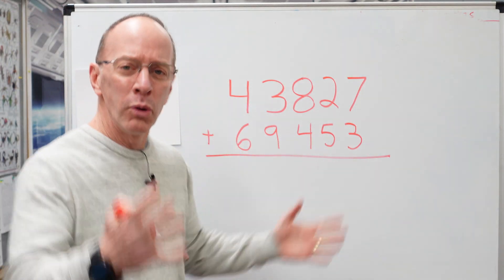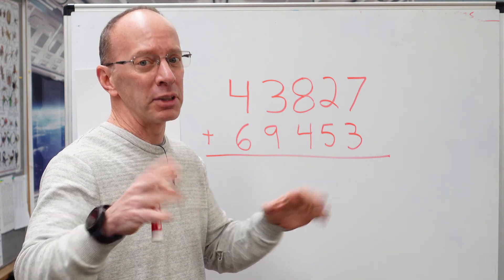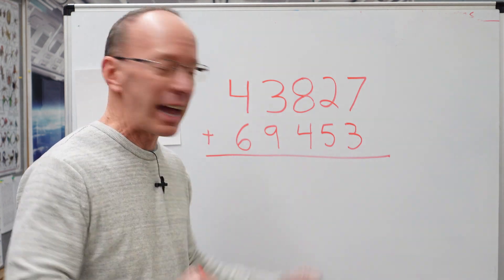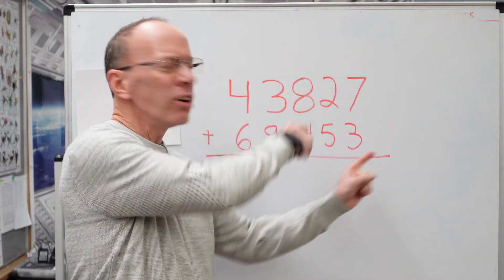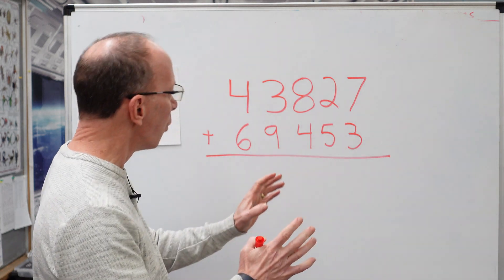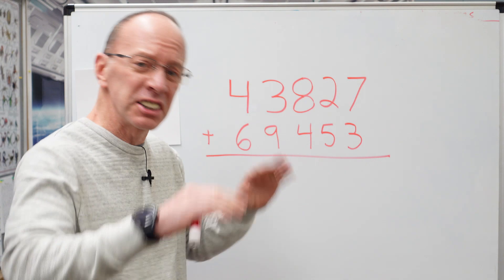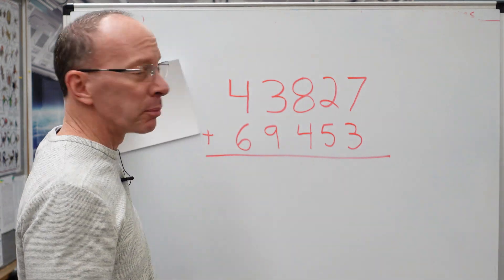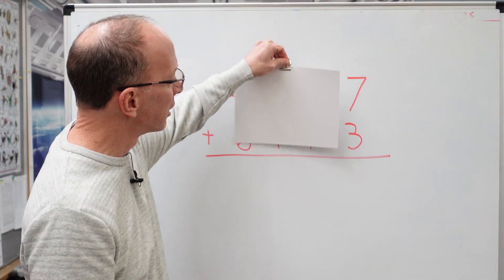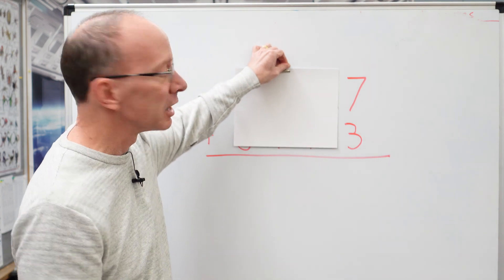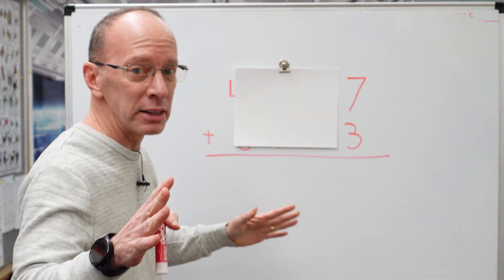All right. So first of all, what do we do? We got different steps on how we add. First, we add the ones. We go all the way over here, but whoa, all these numbers look a little confusing. That's all right. Just cover it up. Take a piece of white paper like this, cover it up. Take it little by little, step by step.